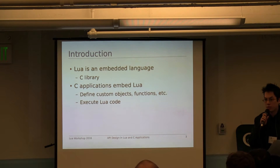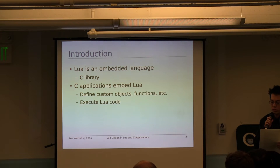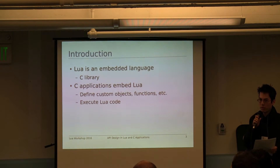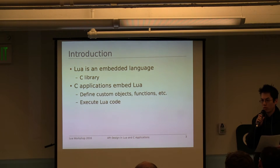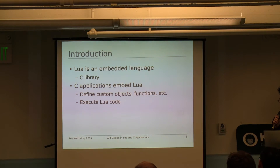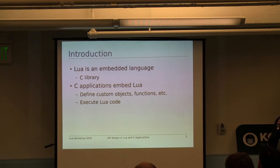Lua is an embedded language. It's just a C library that applications can use to run Lua code. As we heard yesterday, the Lua interpreter is not really Lua — it's just a C program that uses the Lua library to execute Lua code. Therefore, any other applications can also use the Lua library in order to execute Lua code. The only difference between these applications and the Lua interpreter is that these applications can introduce new objects into the default Lua environment as well as any custom application-specific functions and features. And these applications can also run Lua scripts that interact with those additions.